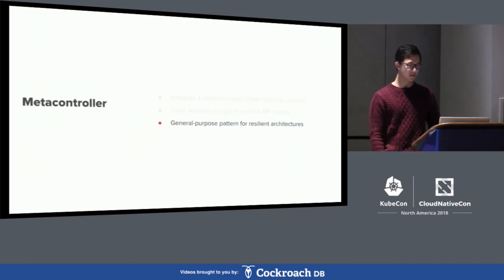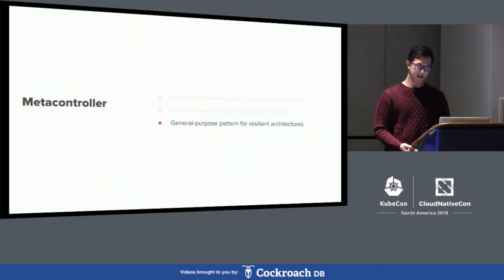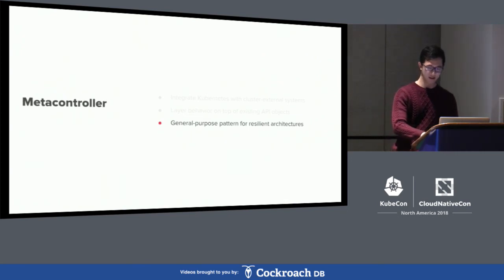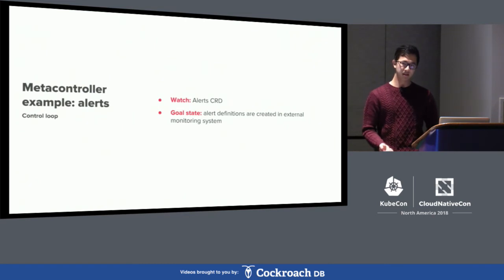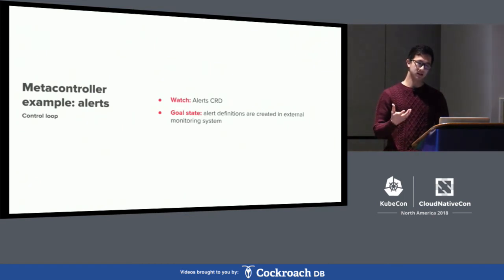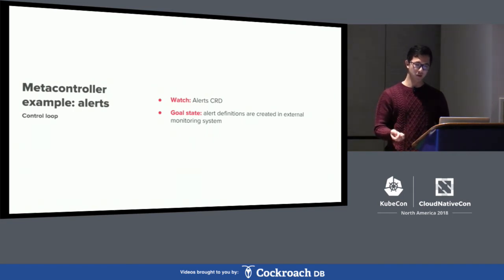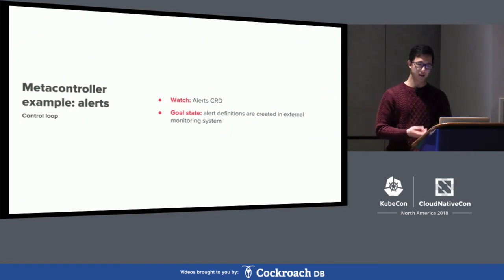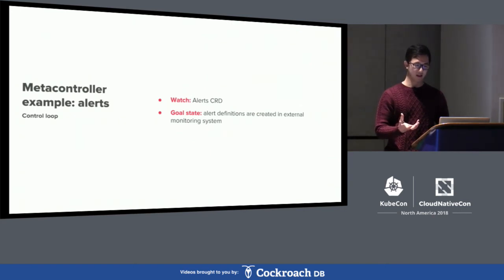Finally, we've been experimenting with using MetaController as a general purpose pattern for resilient architectures. My colleague Melanie talked about using MetaController for creating AWS custom resource definitions and replicating those to provision IAM roles or policies. We also use it for things like alerts — you can create an alerts CRD and then the alerts controller will ensure the alert definitions are created in our external monitoring system.